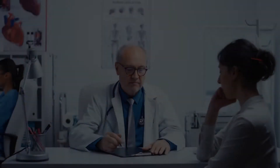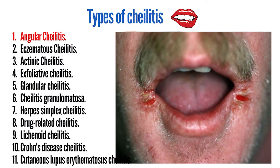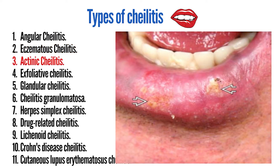There are different types of chylitis based on what causes them or their presentation. Angular chylitis is the most common type. Eczematous chylitis is another type. Actinic chylitis, also known as solar chylitis or chylosis, is a degenerative condition of the tissue of the lips after years of exposure to ultraviolet light such as sunlight. It is a premalignant condition.